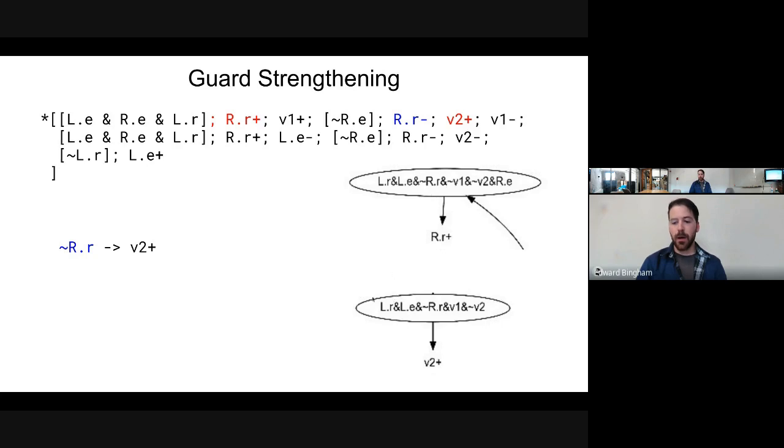So now this guard will fire in this place when it shouldn't, and we need to add a term to disambiguate. If we look back through the set of transitions, we have V1 up, not R.E, and R.R down. In general, we want to pick the one that's closest to where we are because that will give us the most likelihood of eliminating more states downstream. This is mostly a heuristic. If we look at V1 up, we'll notice that disambiguates this production rule from this guard - V1 is low in this and high in this. So we add V1 and not R.R yields V2 up.